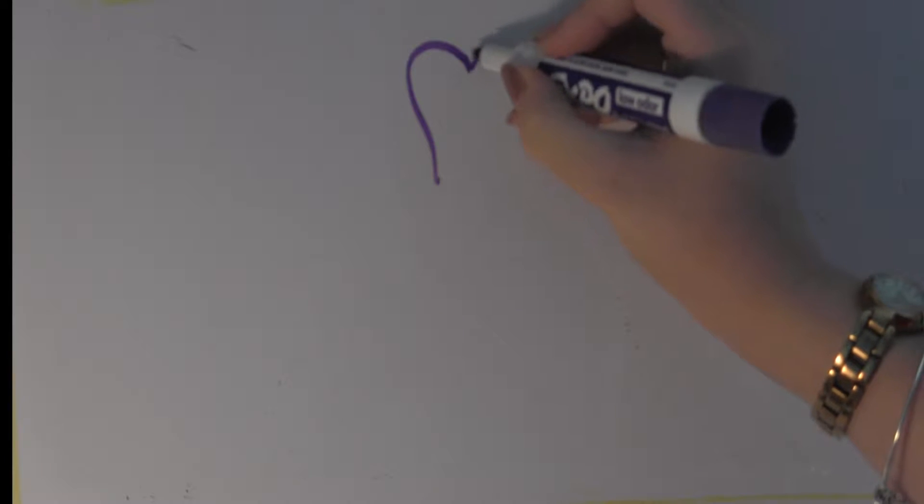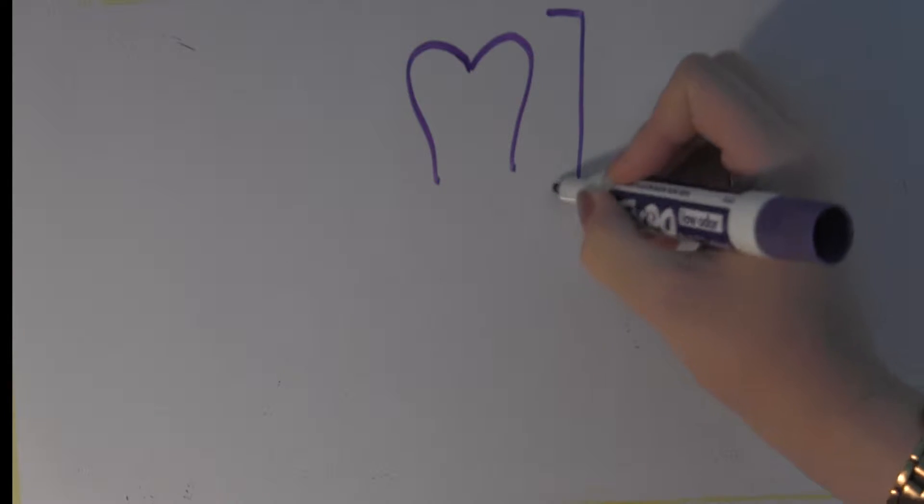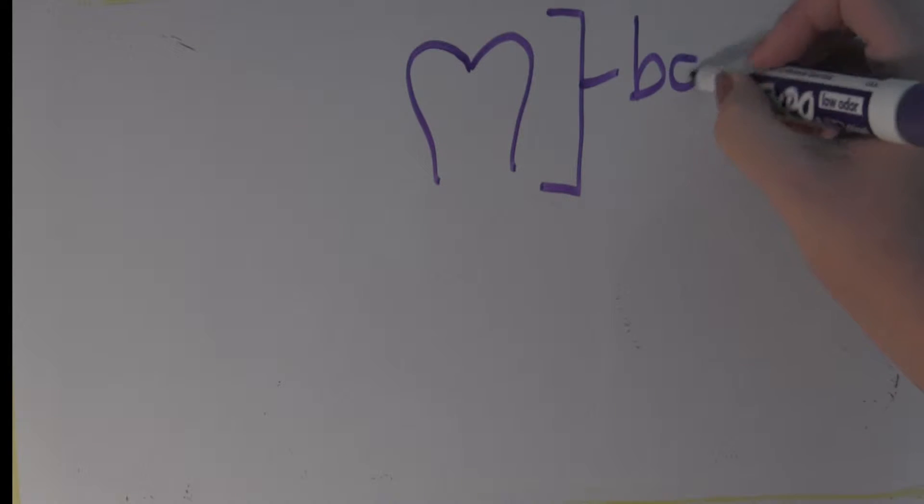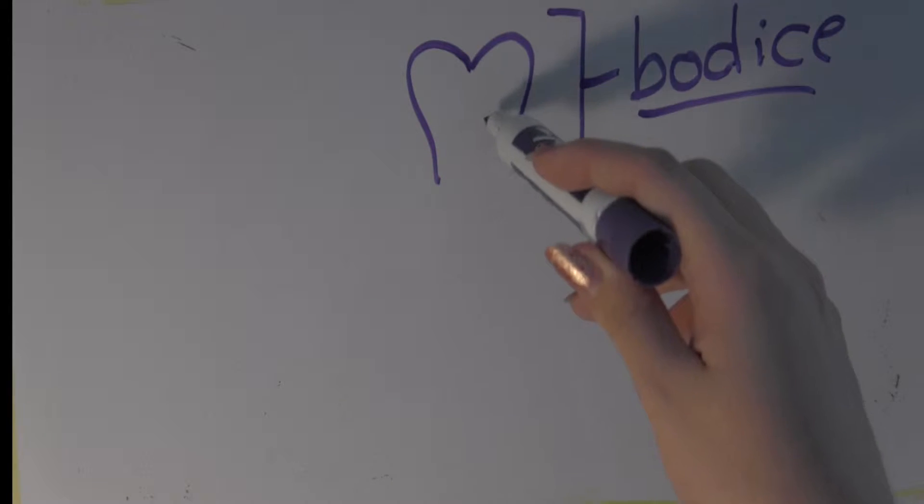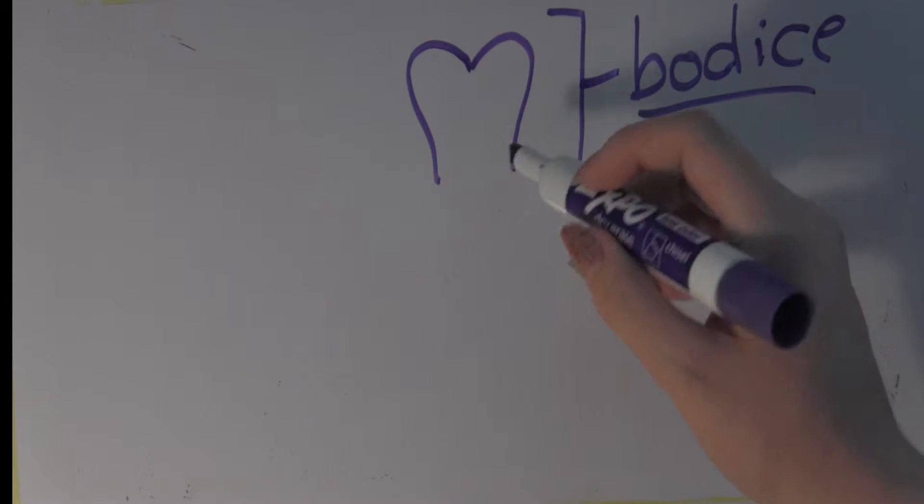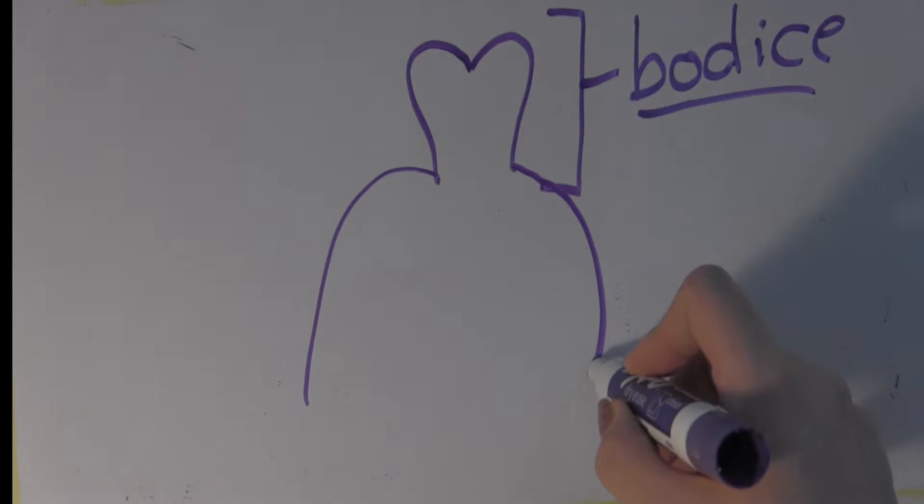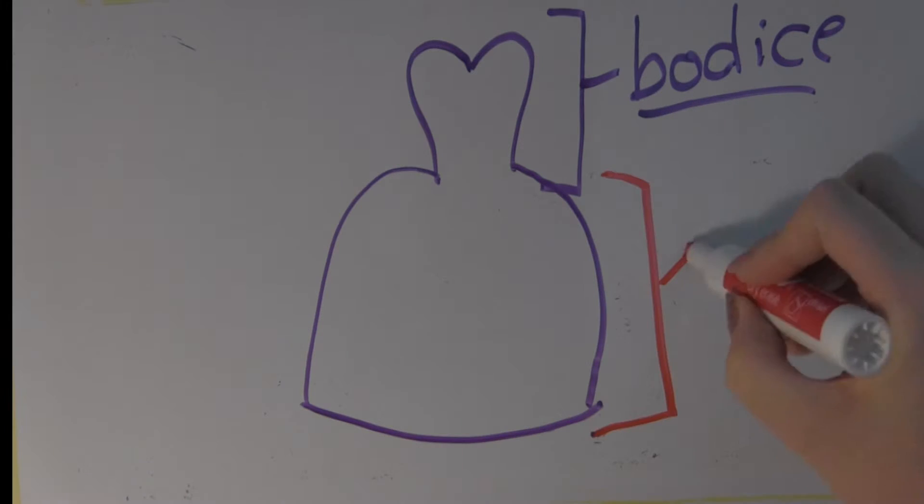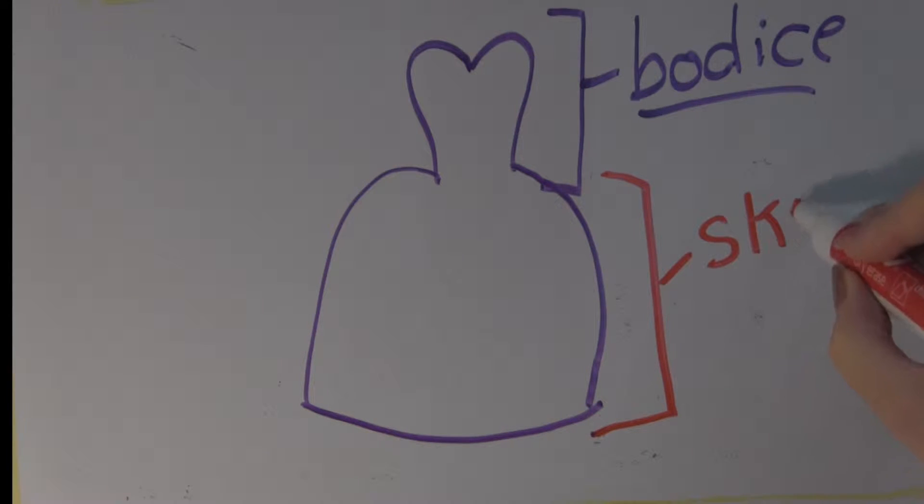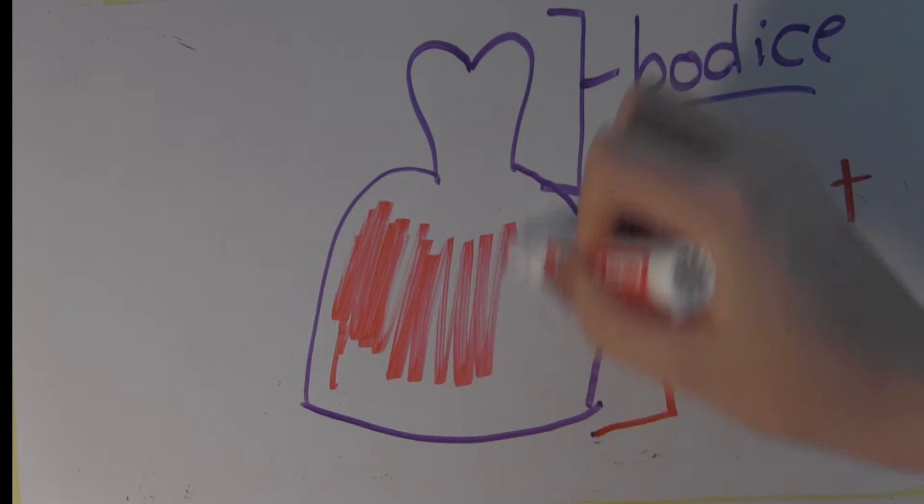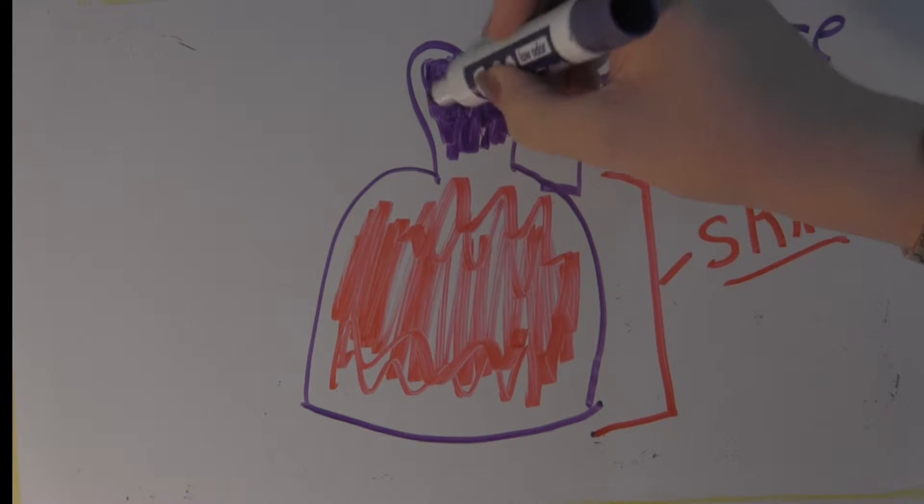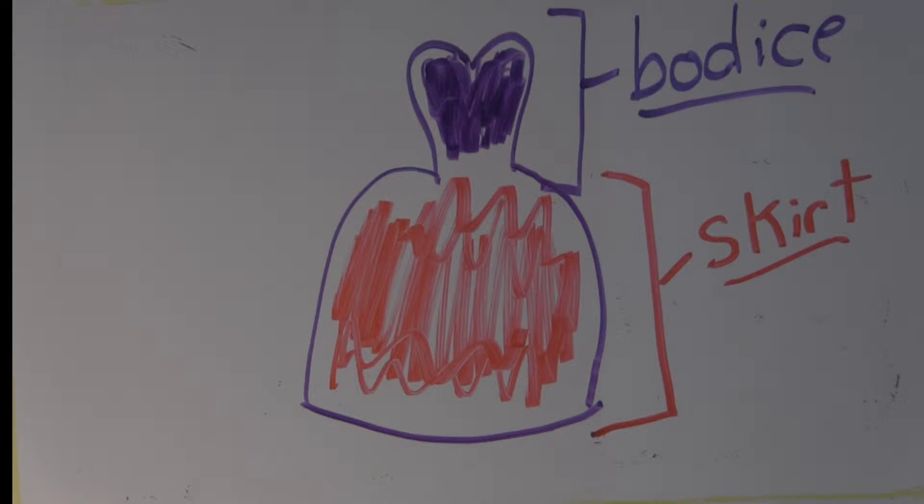First, let's go over some vocab, just so you know the terminology I'm going to be using for this video. The top portion of the gown is called the bodice, and it's normally whatever is tight-fitting on the body. The skirt is the lower portion, and that's what's going to contain the layers of tulle or crinoline. Most of the time, brides like to call this poof. Just for your convenience, I colored the skirt in red and the bodice in purple, just in case you were a little confused.